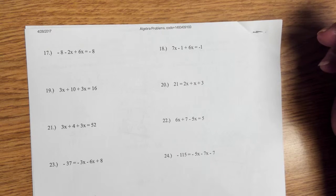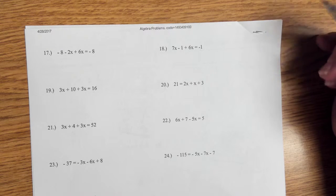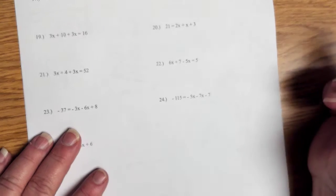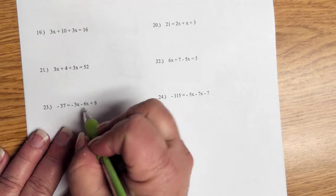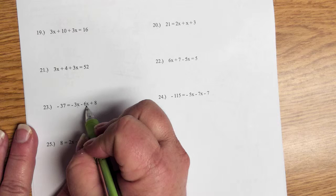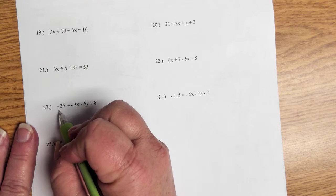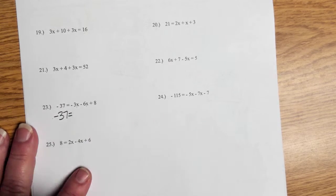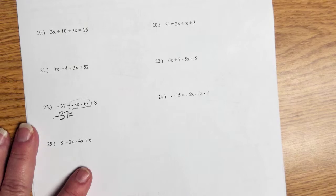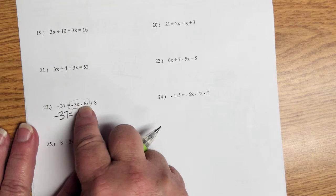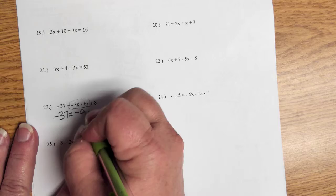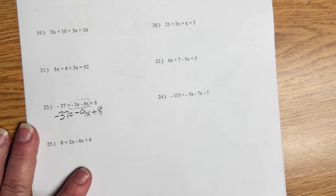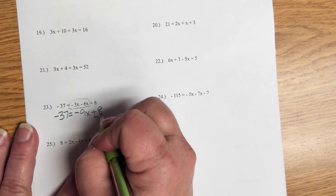Let's do number 23, how about that? So number 23, I have a variable and a variable, and then I have a constant and here's a constant. Can't do anything with this one right now, so I'm going to write negative 37. I have to combine these two variables: a negative 3 and a negative 6 gives me negative 9x. Don't have anything to do with that one yet, so just bring it down.